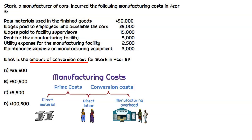Let's go through and see which of these costs would be considered a conversion cost. The first one is raw materials used in the finished goods. If they're producing cars, this is going to be the steel, the tires, the steering wheel — those are considered direct materials and are part of prime costs, not conversion costs. So we can exclude that $50,000.